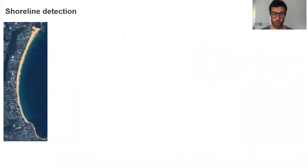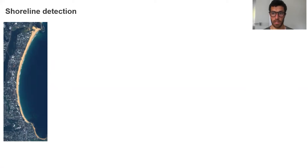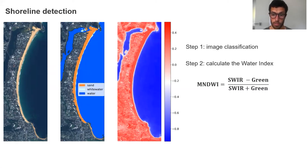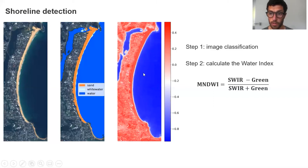I'll run through very quickly how the algorithm works. This is an RGB 10 meter per pixel image of Narrabeen taken by Sentinel-2. The first step is to classify the image. We'll use a classifier to find which pixels are sand, white water, or water. Then we'll calculate what we call the Modified Normalized Difference Water Index (MNDWI), which is just the difference between the short wave infrared and green bands.